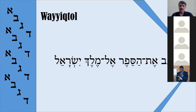The last example: vaniqtov — remember that nun has dagesh forte, and patah with vav plus nun indicates Wayyiqtol. Translation: 'and we wrote.' The students appear to understand the topic.